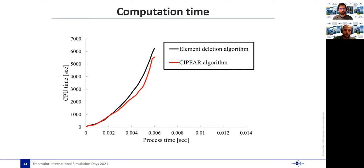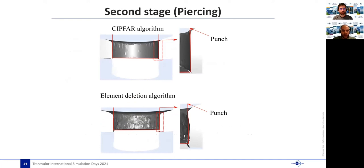Next, we have the piercing stage where we also have a comparison between the CEPFAR and element deletion algorithms. Two main observations can be made. The first observation is that the quality of sheared surfaces with the CEPFAR algorithm is much better than the element deletion algorithm. And the second observation is that with the element deletion algorithm, we can see that there is a gap between the sheared surface and the punch, which is related to the deletion of elements in the zone, which is known to be non-physical. And it can be expected that it will increase with the increased element size, whereas with the CEPFAR algorithm, we can see a perfect contact between the two surfaces, which is something that we expect to see in experiments.